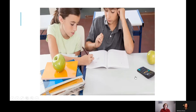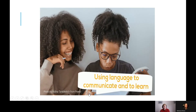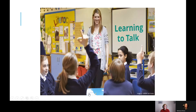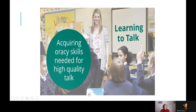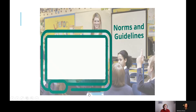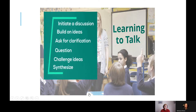We're going to start by showing you a short video to illustrate the talk competency. Talk in the classroom — using language to communicate and to learn — has two components: learning to talk and talking to learn. Learning to talk means that students acquire the skills needed for high-quality talk. In the classroom, this might include establishing norms and guidelines with your students, for example: be an active listener, take turns, ask questions to encourage others to participate, and be polite when you disagree. Students also need to learn conversation skills like how to initiate a discussion, build on ideas, ask for clarification, question, challenge ideas, and synthesize.